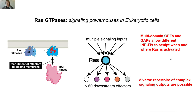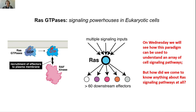By building these multi-domain GEFs and GAPs, they can connect different signaling inputs to different signaling outputs. What we'll learn about on Wednesday is how this core logic and paradigm can be used to understand an array of very different cell signaling pathways that perform different functions — all based on this simple procedure for turning on and off this GTPase. That is basically the core of today's lecture. If you're interested to know how we came to understand anything about these RAS signaling pathways, watch the companion video that walks you through the history of RAS signaling. Otherwise, I'll see you on Wednesday for a discussion about how this RAS paradigm is used to build a whole bunch of different signaling pathways.